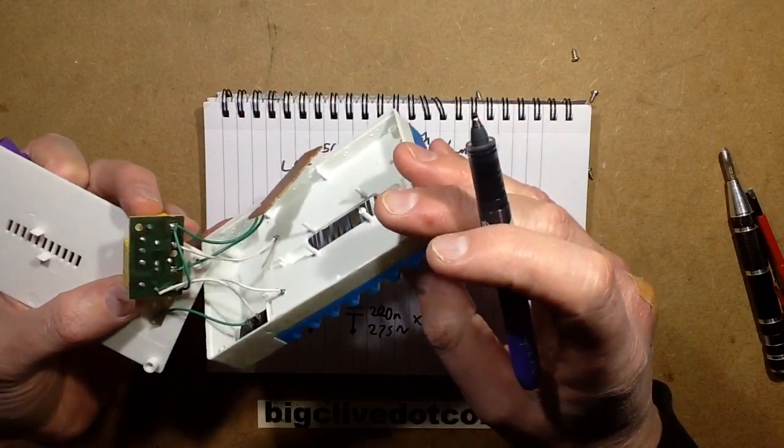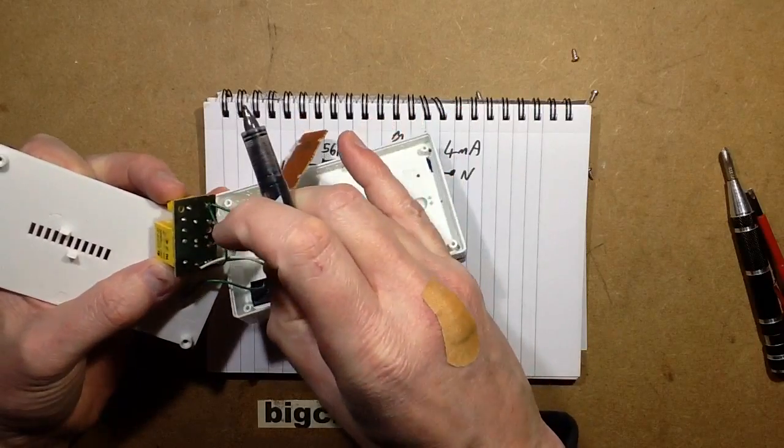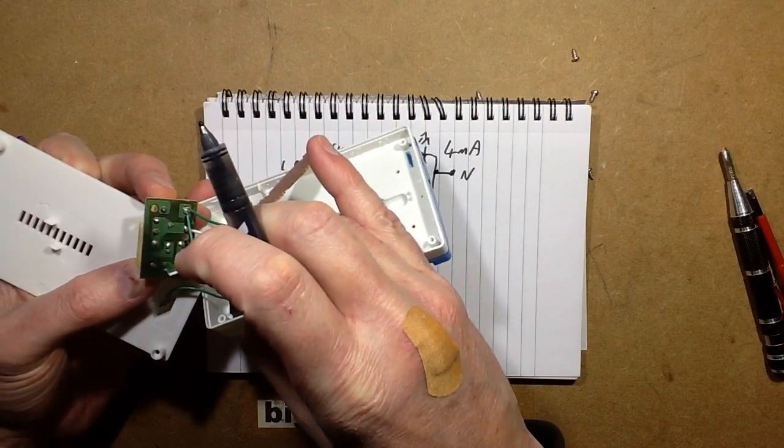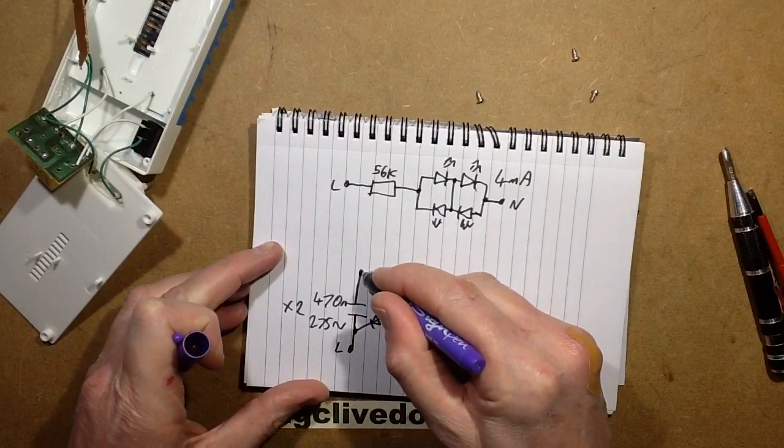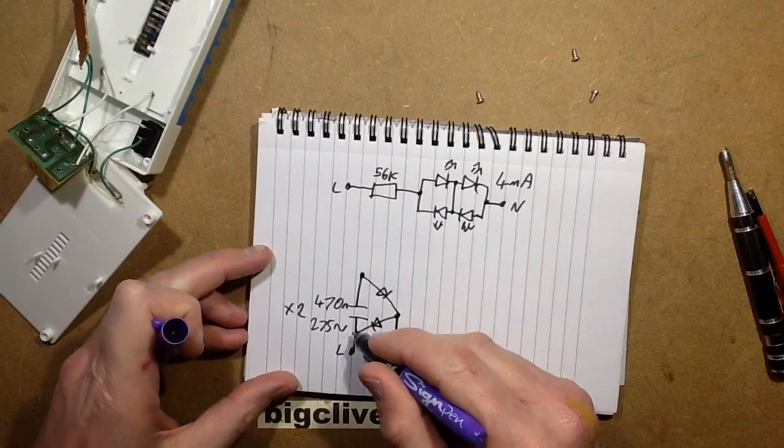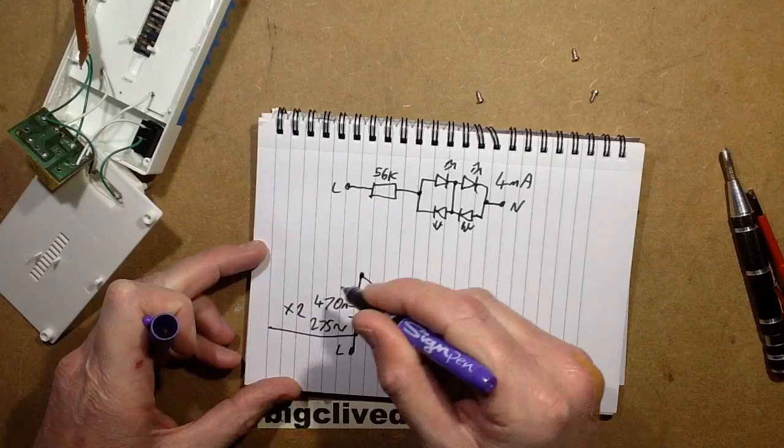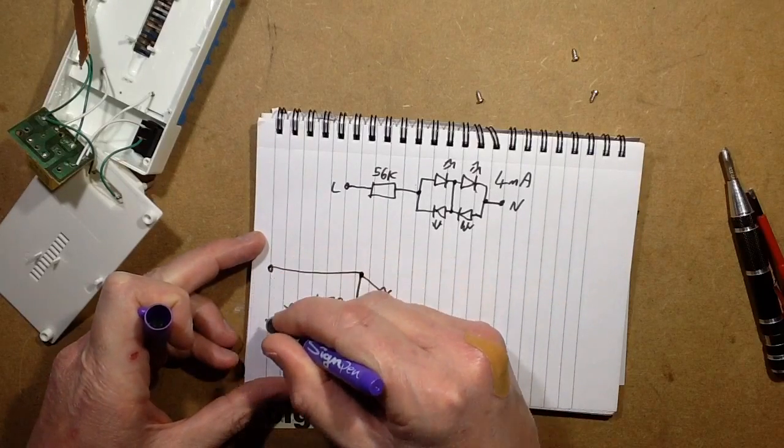And the output of the... the output to the grid is just across that capacitor. So this capacitor here, I kind of botched that now but I'm going to have to draw it like that, is going to the grid.